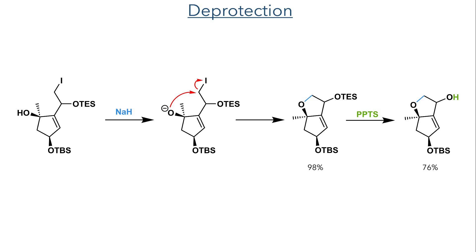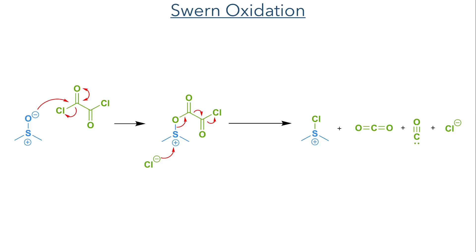The reaction of the product with PPTS selectively deprotected the TES group, leaving the TBS group intact. In the next step, the newly revealed hydroxyl group was oxidised using Swern oxidation.